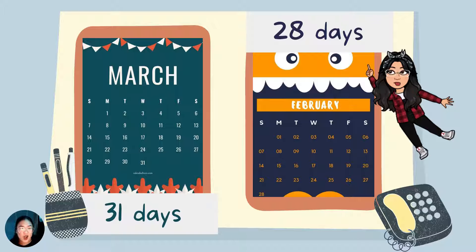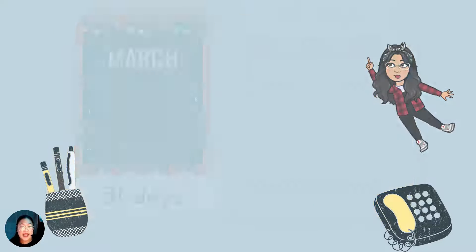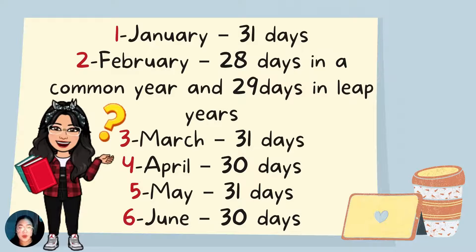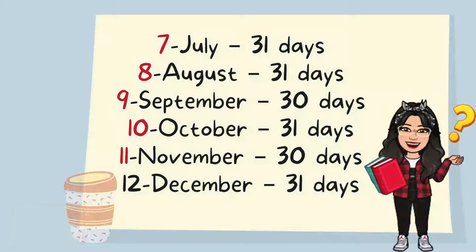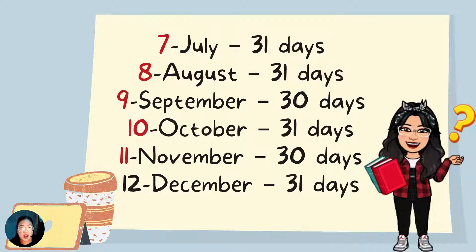The 29th day is called leap day. Very good, class! Now let's proceed to the months. January has 31 days. February has 28 days in a common year and 29 days in a leap year, and so on and so forth. We have March, April, May, June, July, August, September, October, November, and December.